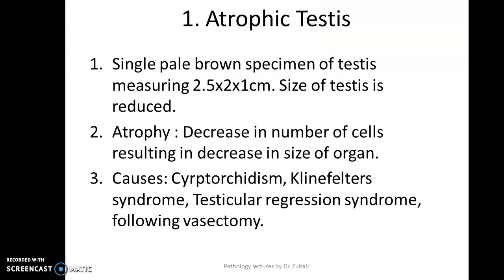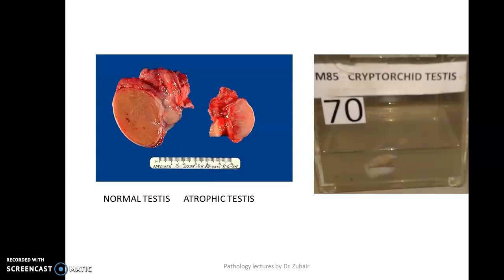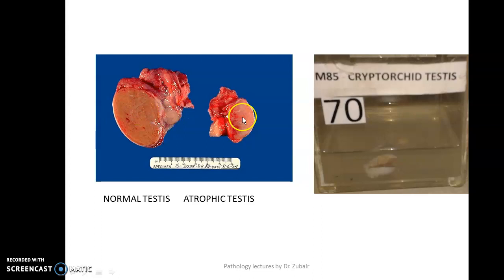The first specimen I have chosen is atrophic testes. This is the specimen of atrophic testes, and this is a normal testes. In comparison, you have an atrophic testes — it is much smaller.